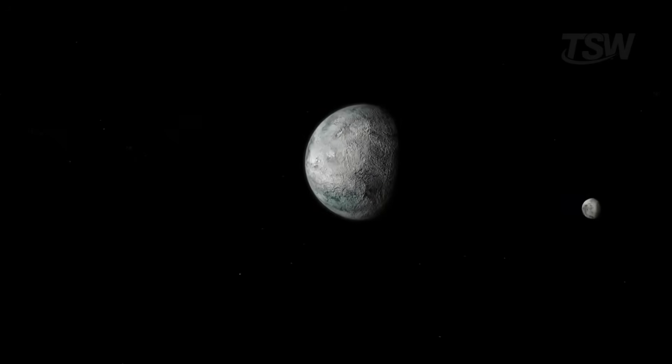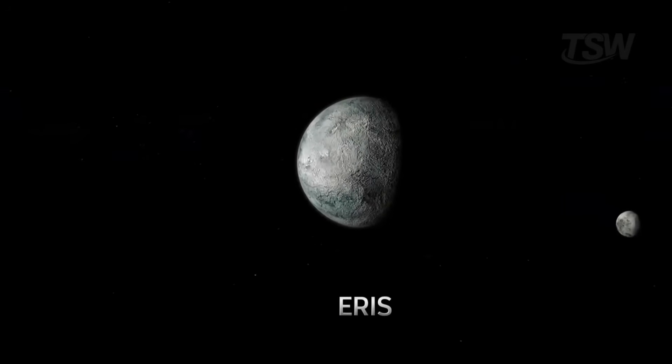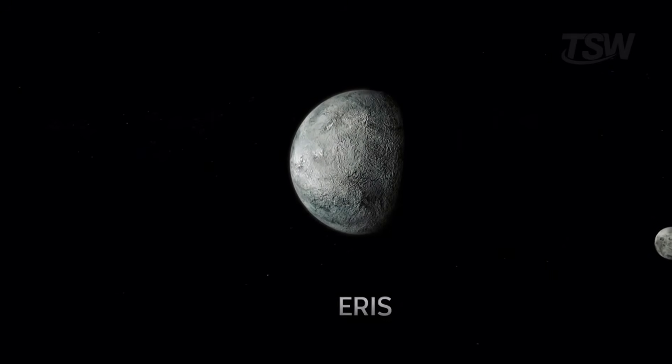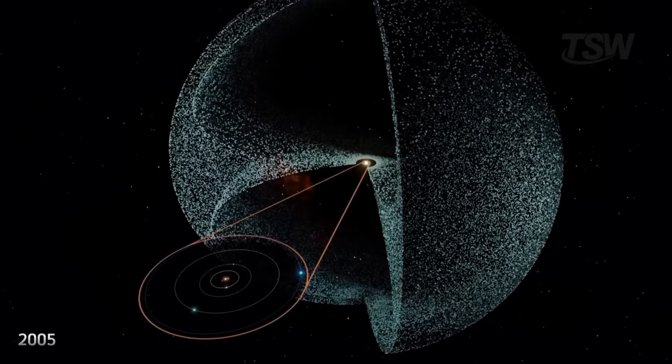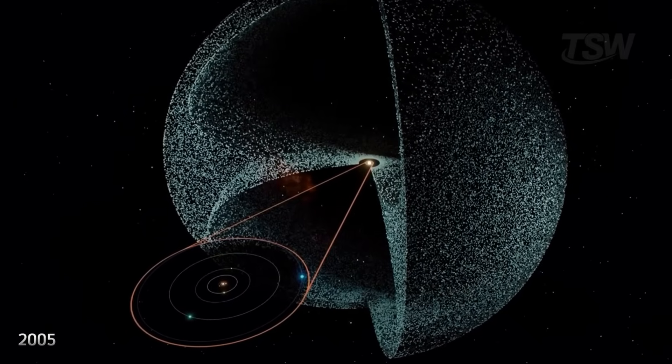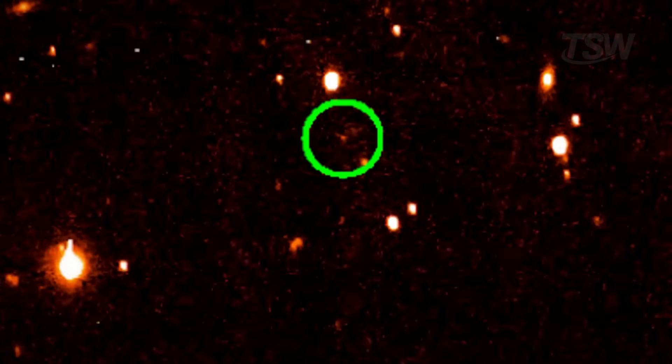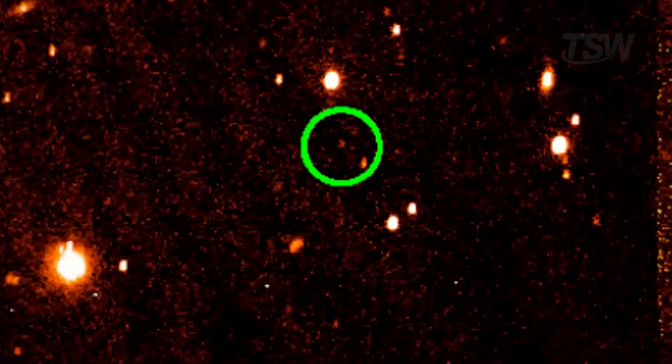But none of these objects sparked as much debate as Eris. When it was discovered in 2005, it was thought to be even larger than Pluto. That triggered a massive discussion within the scientific community. If Eris was a planet, then shouldn't Pluto still be one too? Or was it time to rethink our definitions?